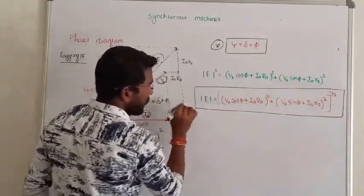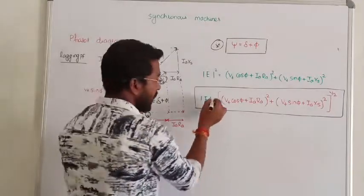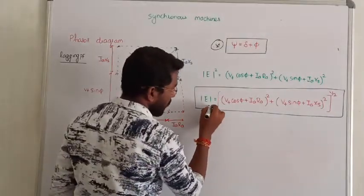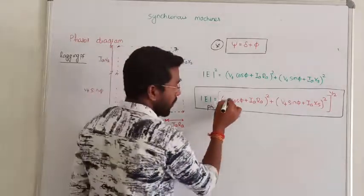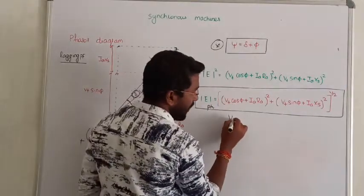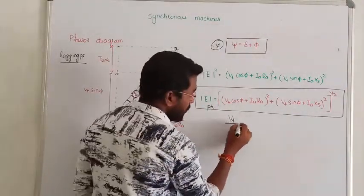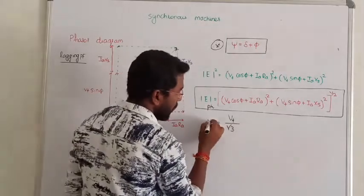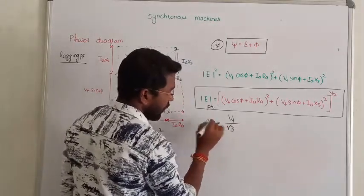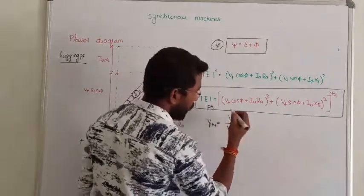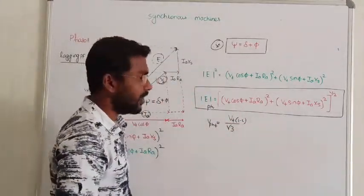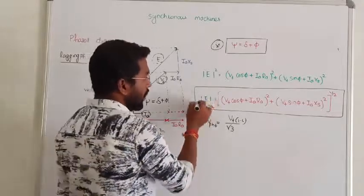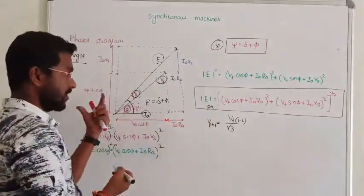This is the generalized form of the equation — that is the induced EMF. Remember one more thing: this is per phase. Per phase, we can write the line voltage. If the line voltage is given, you have to divide it by root 3 — that is the per-phase terminal voltage. This is line-to-line voltage. So that is how we are finding the induced EMF from the phasor diagram.